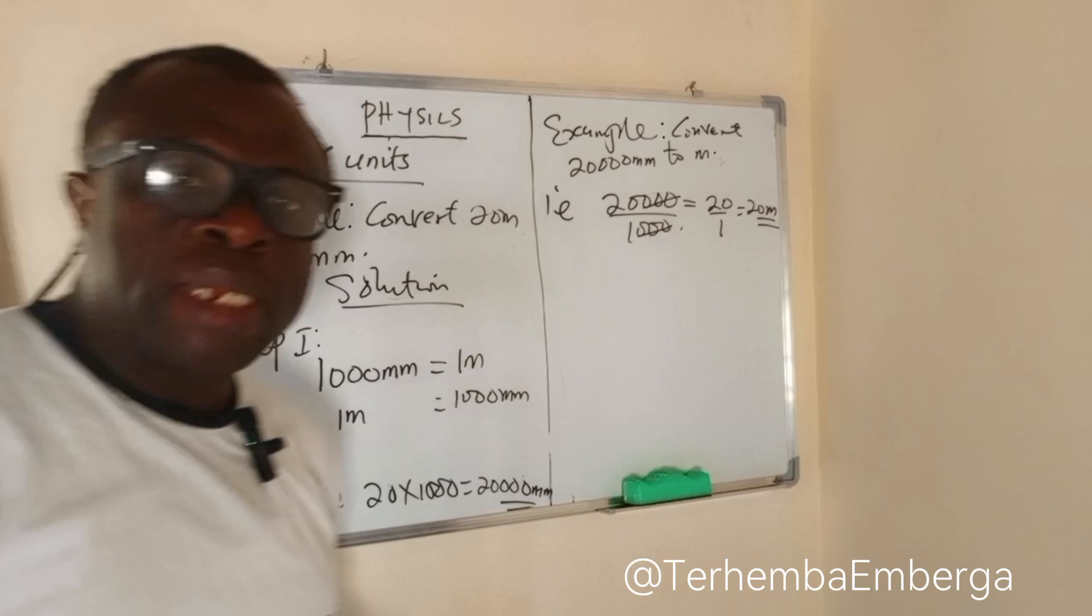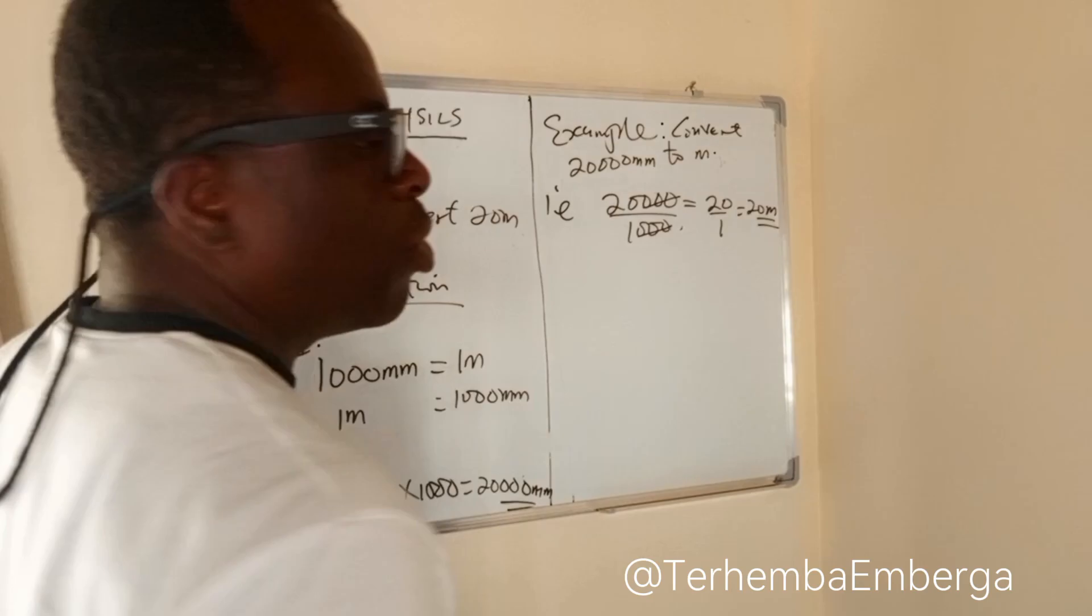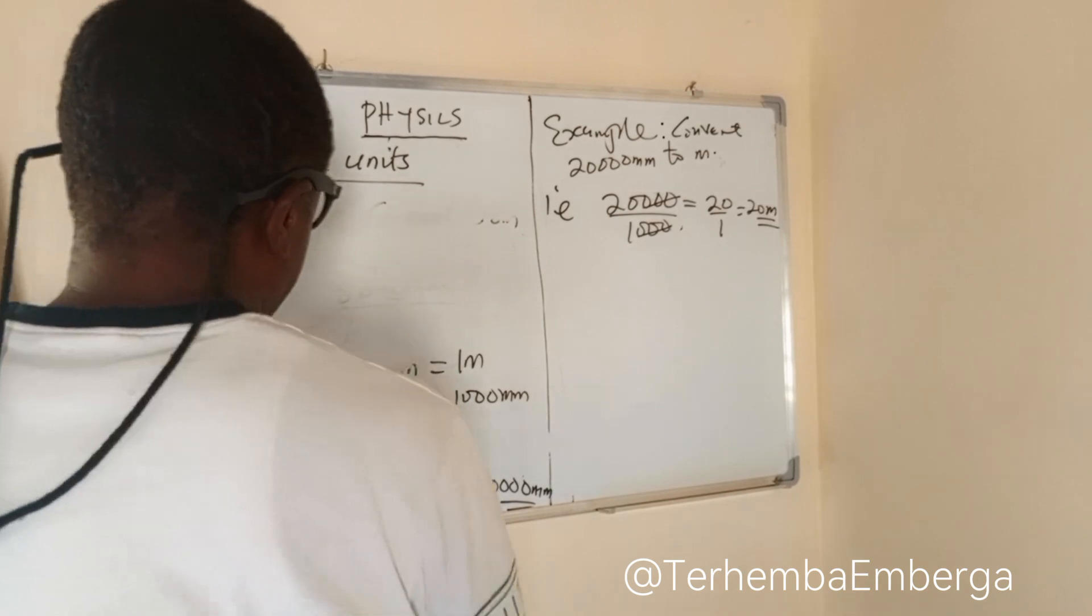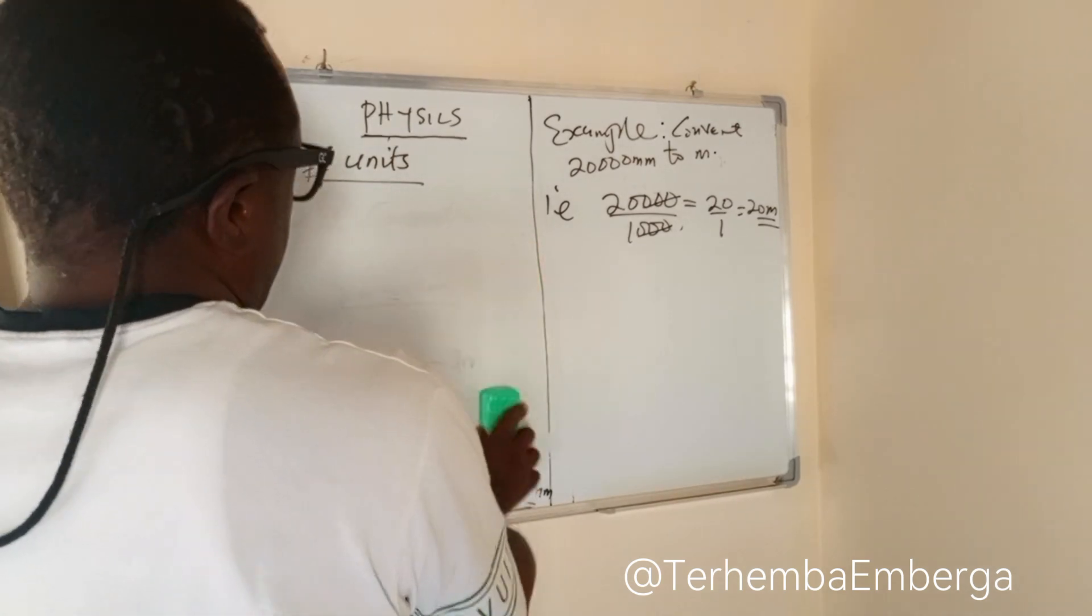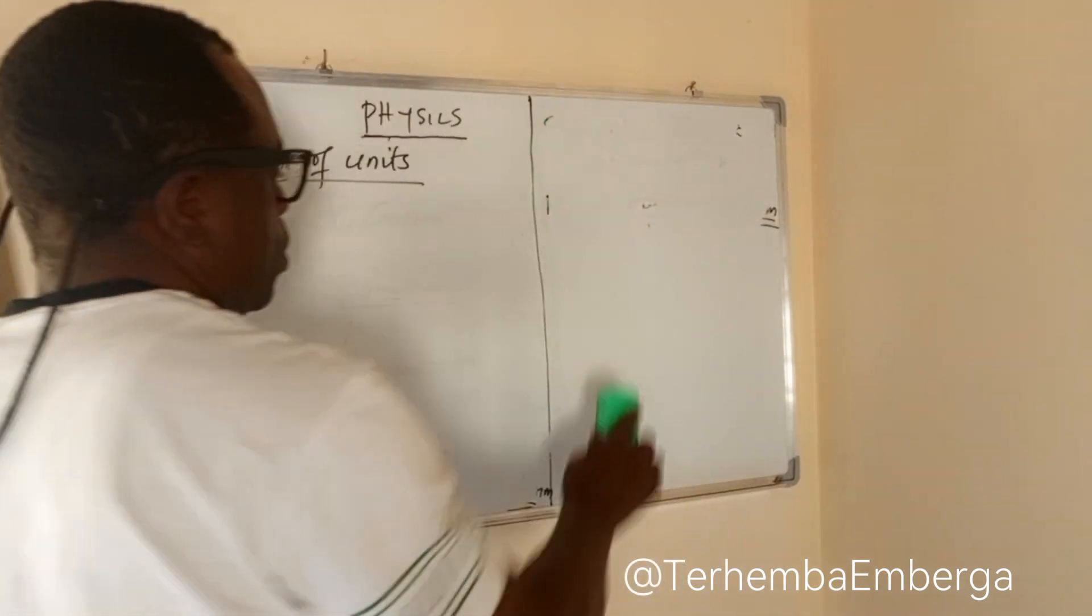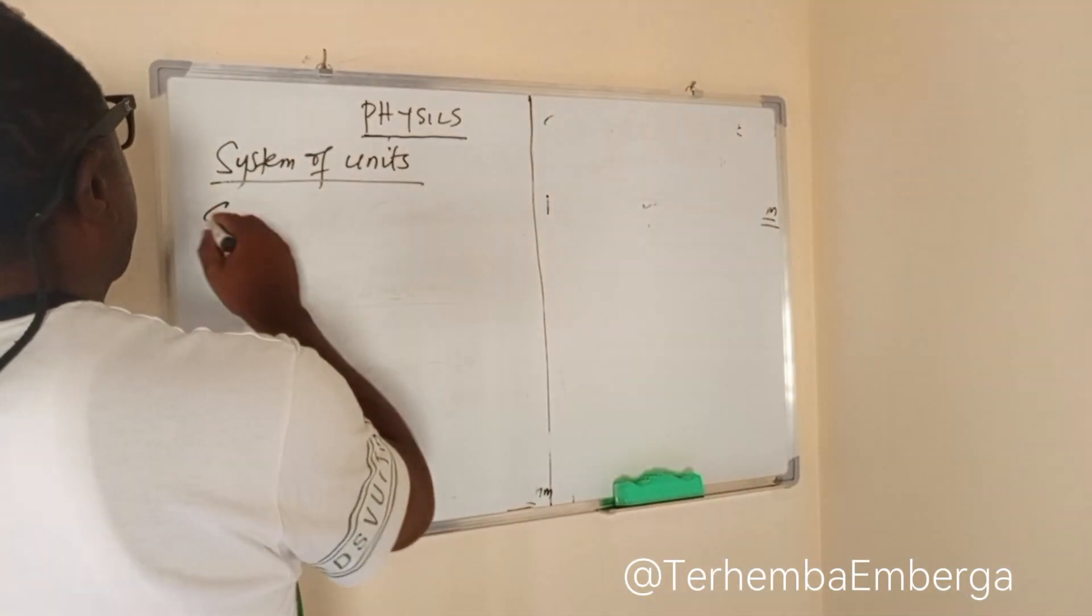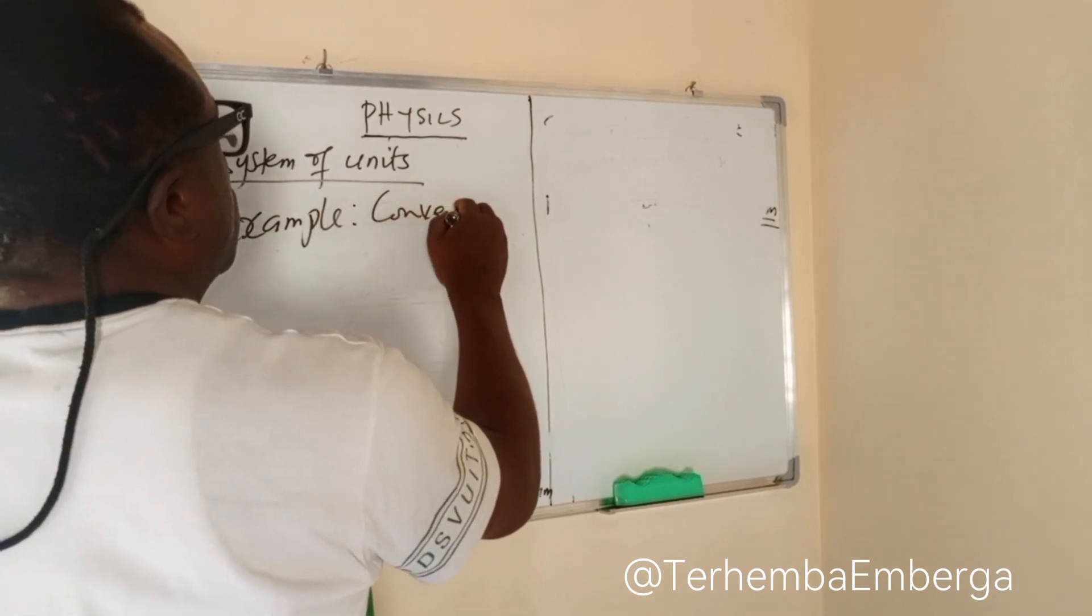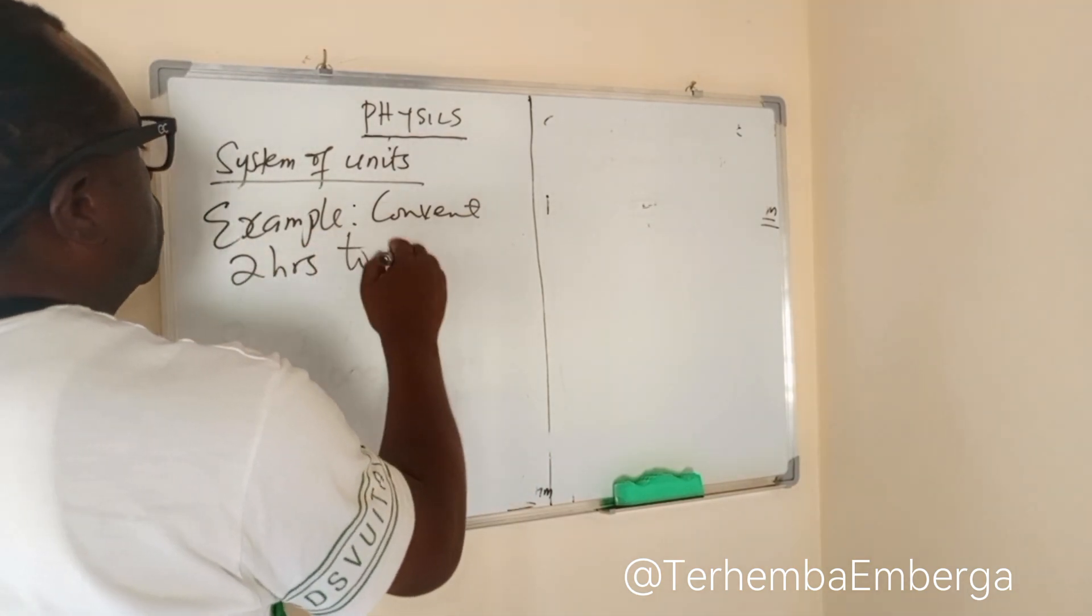Let's also look at another example. This time, we'll look at time. The SI unit for time is seconds. So let's look at this task. Convert 2 hours to seconds.